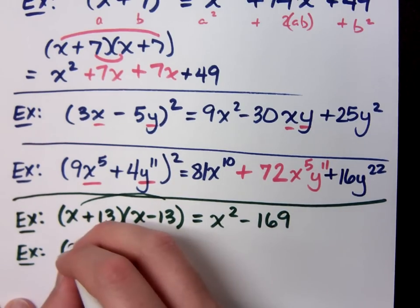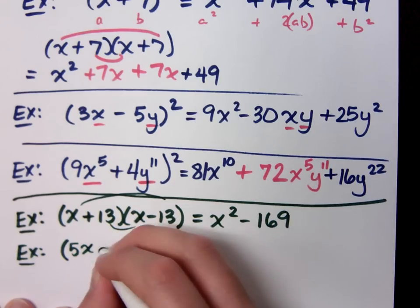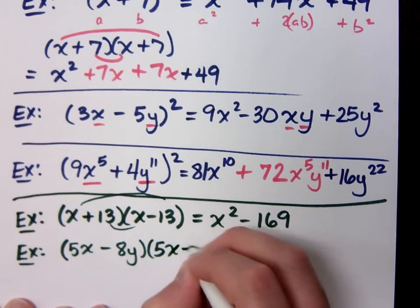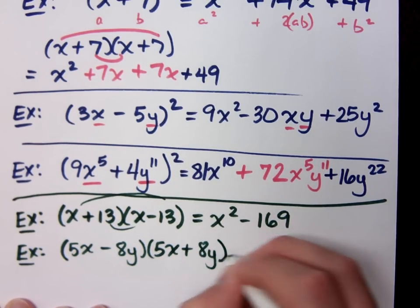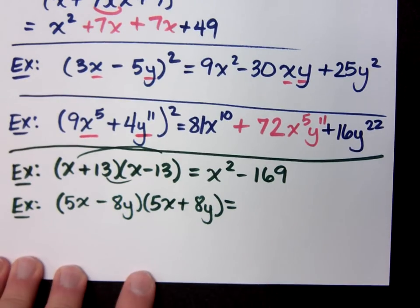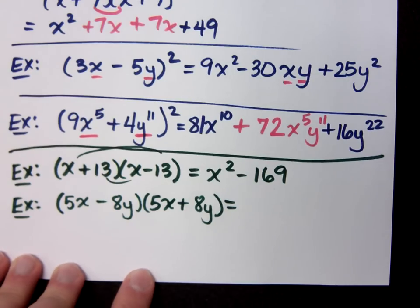If I were to do (5x - 8y) times (5x + 8y). Is that set up to allow me to use the difference of squares? Okay. So how does it work?